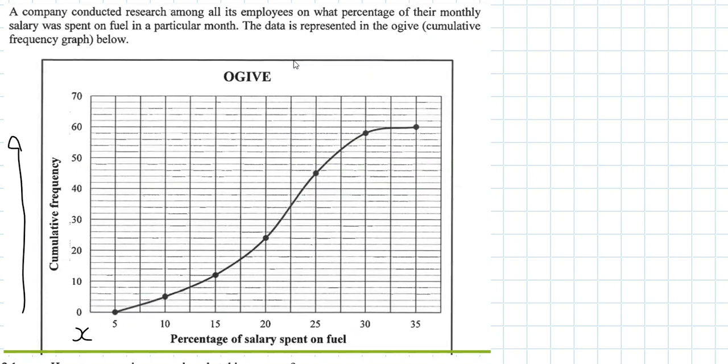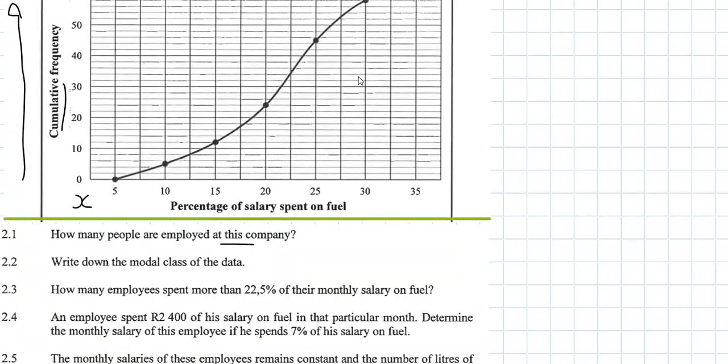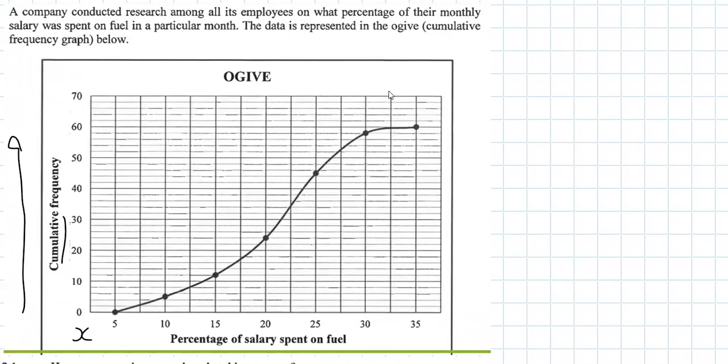Question 2.1: How many people are employed at this company? Well, the percentage of salary, the x-axis, is not telling us anything about people, so we look at the cumulative frequency. It's the top amount of people, so we go to where our final entry is. I can see that it's 60, so cumulative frequency is 60. Therefore there's 60 employees.